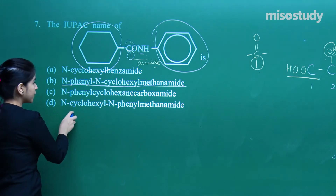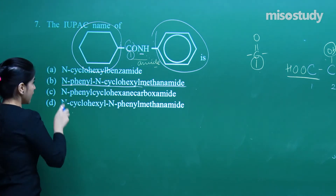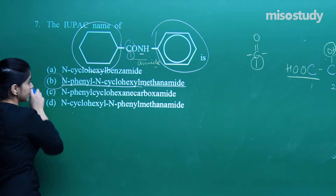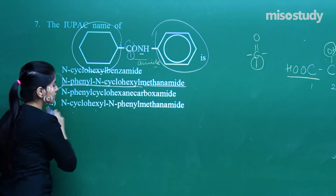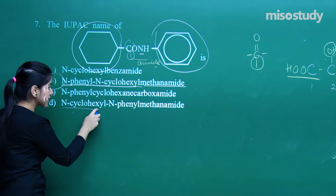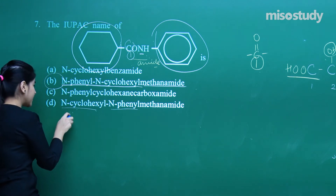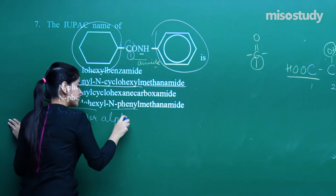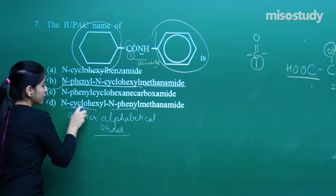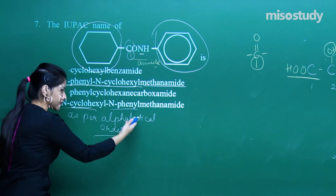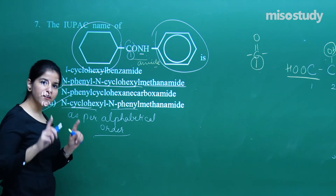Super easy but it seems confusing — you just need to have this carbon as 1 and treat the rest as substituents. Now I've got two such options: N-phenyl, N-cyclohexyl and N-cyclohexyl, N-phenyl. What do you need to choose? As per alphabetical order — cyclohexyl comes before phenyl alphabetically. So D is the correct answer. I hope everybody has got it.